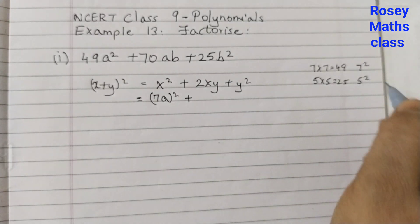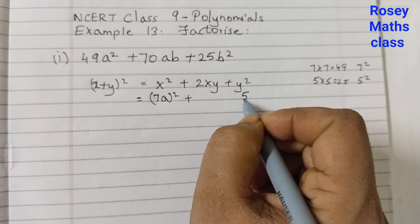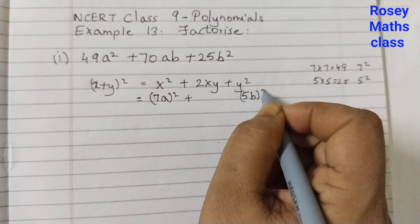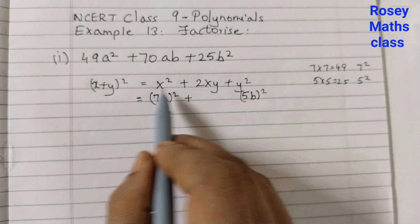That means 5 squared is 25. We can write this as 5b squared. These two are done.